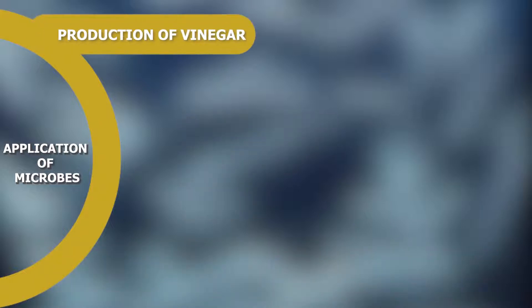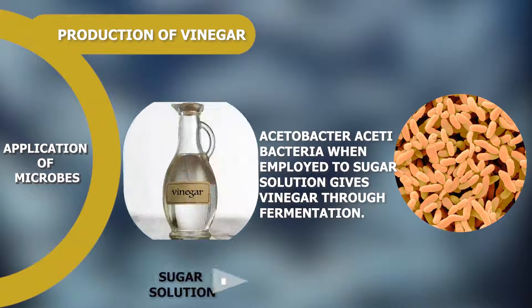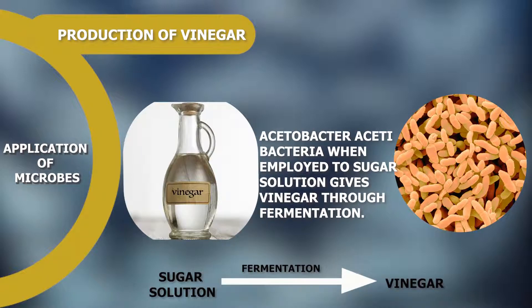Production of Vinegar: Vinegar is manufactured from sugar solution employing Acetobacter bacteria by the fermentation process. It is a good preservative — because of vinegar, pickles do not get spoiled, as it prevents the growth of microbes.